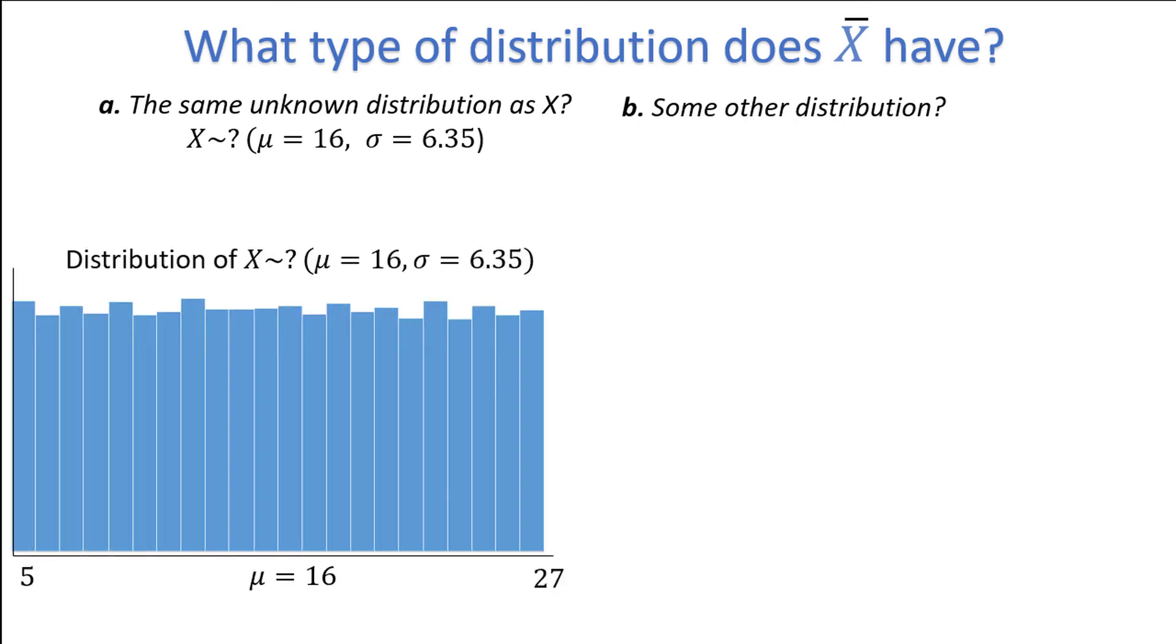Here is the distribution of a sample of 20,000 individual values. It's very spread out and all observations are between 5 and 27, with a mean of 16. It looks quite a bit like a uniform distribution, and the samples were actually generated from a uniform distribution. But to emphasize that this could be any distribution, I'll leave it as a question mark for now.